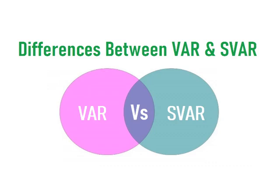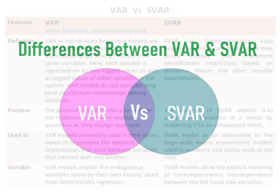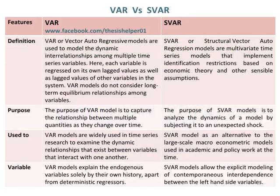Differences between VAR and SVAR. VAR, or vector auto-regressive models, are used to model the dynamic interrelationships among multiple time series variables.